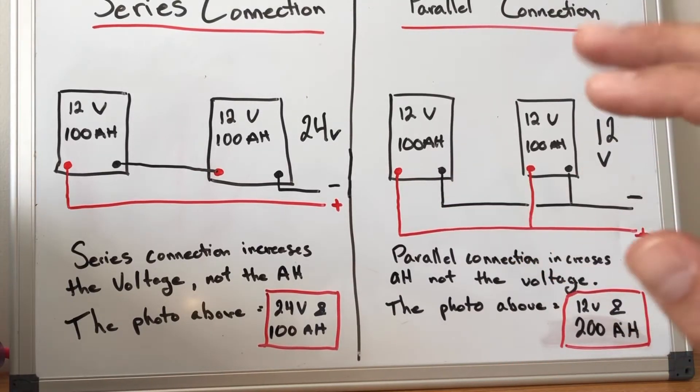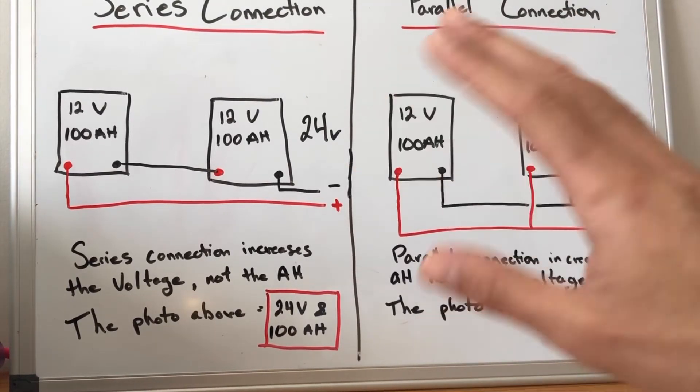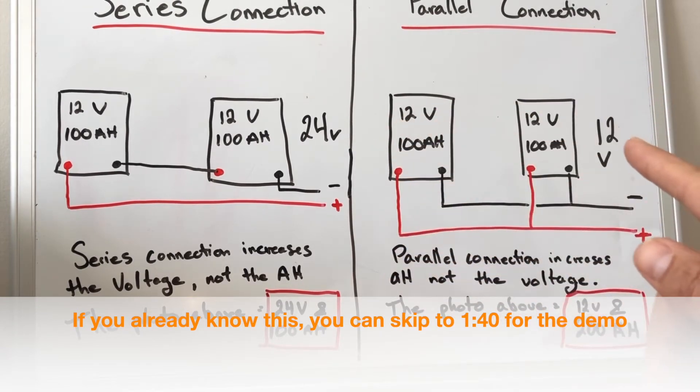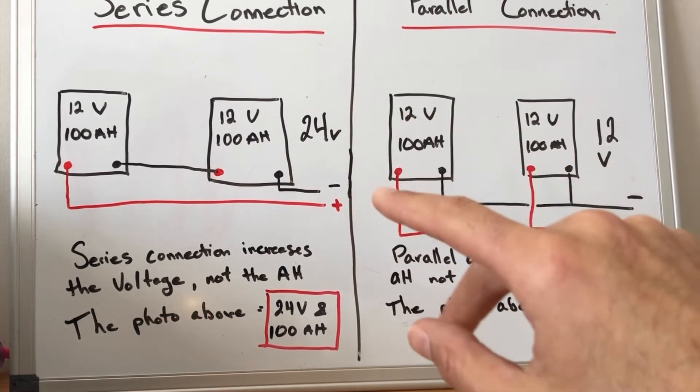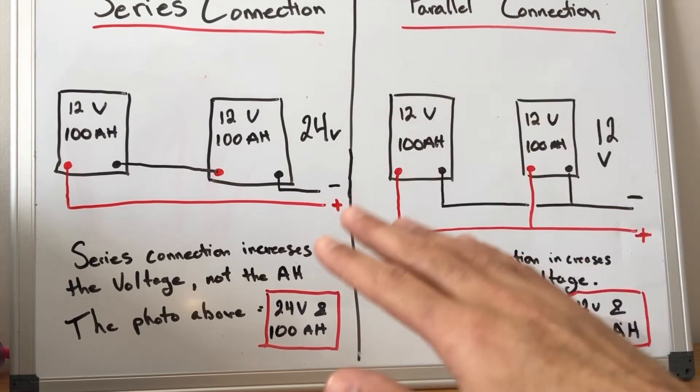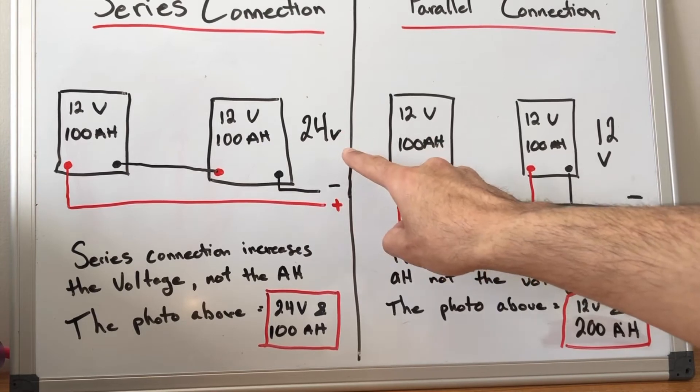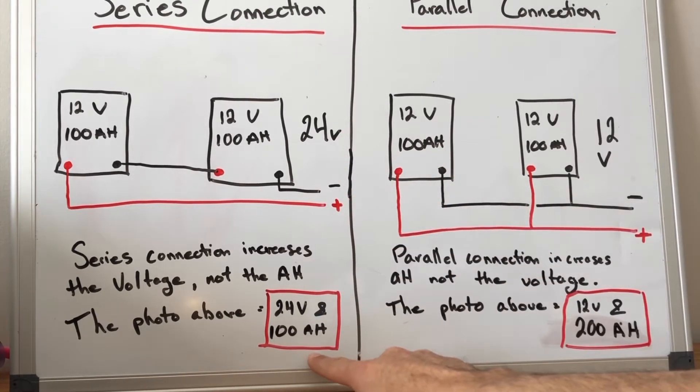So please excuse my crappy drawings here but high level this is what you're going to need to know for a series versus a parallel connection. So with two 100 amp hour 12 volt batteries if you wire them in series this will increase the voltage to 24 volts but the amp hours stay at 100.